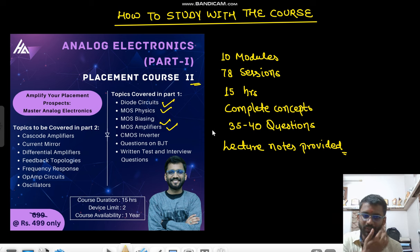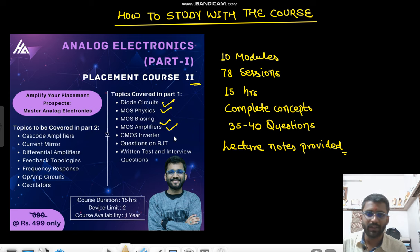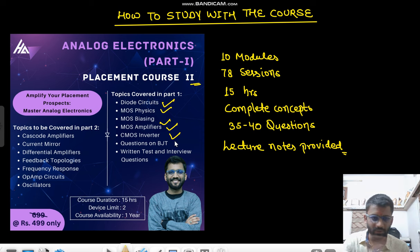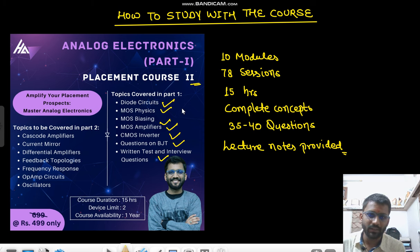In MOSFET amplifiers, all the amplifiers — common gate, common drain, common source, and cascade amplifier — have been covered. Then we have the CMOS inverter for a complete analog profile. CMOS inverter for analog profile is covered completely. Then we have questions on VGT, and we have discussed some written test and interview questions.